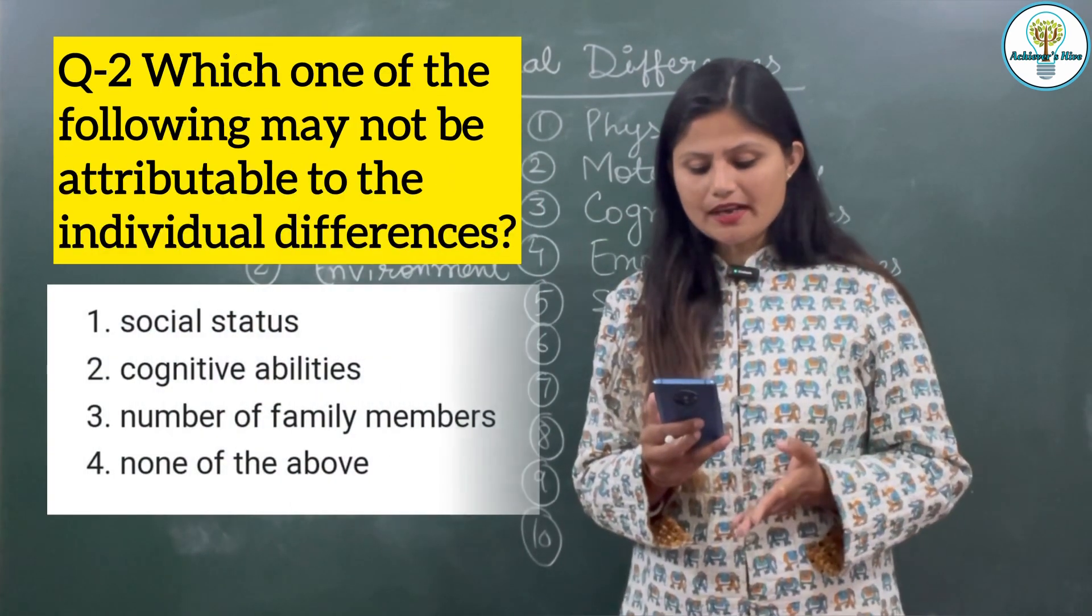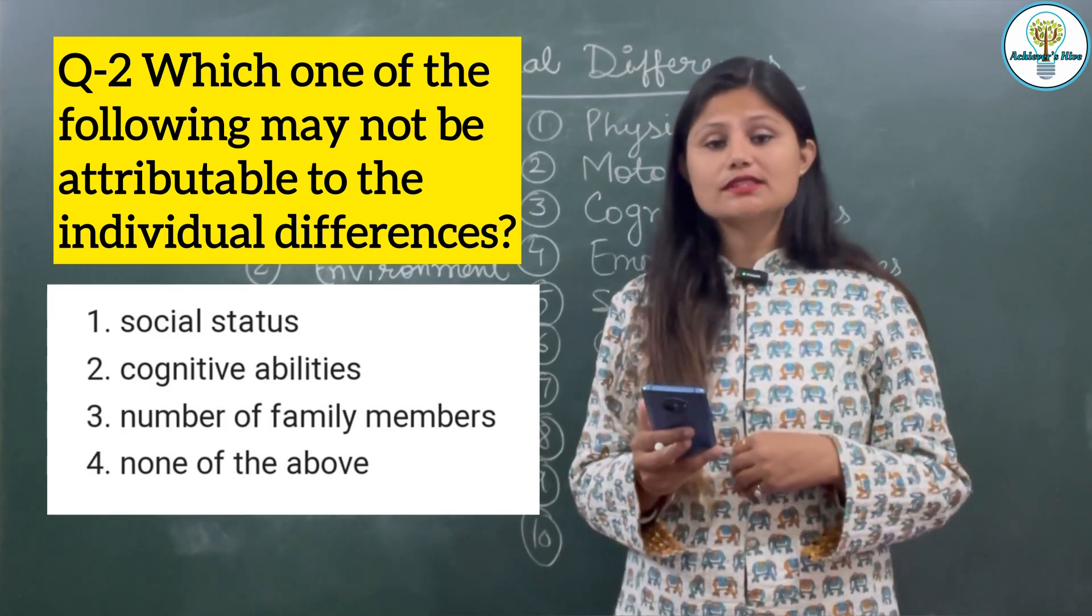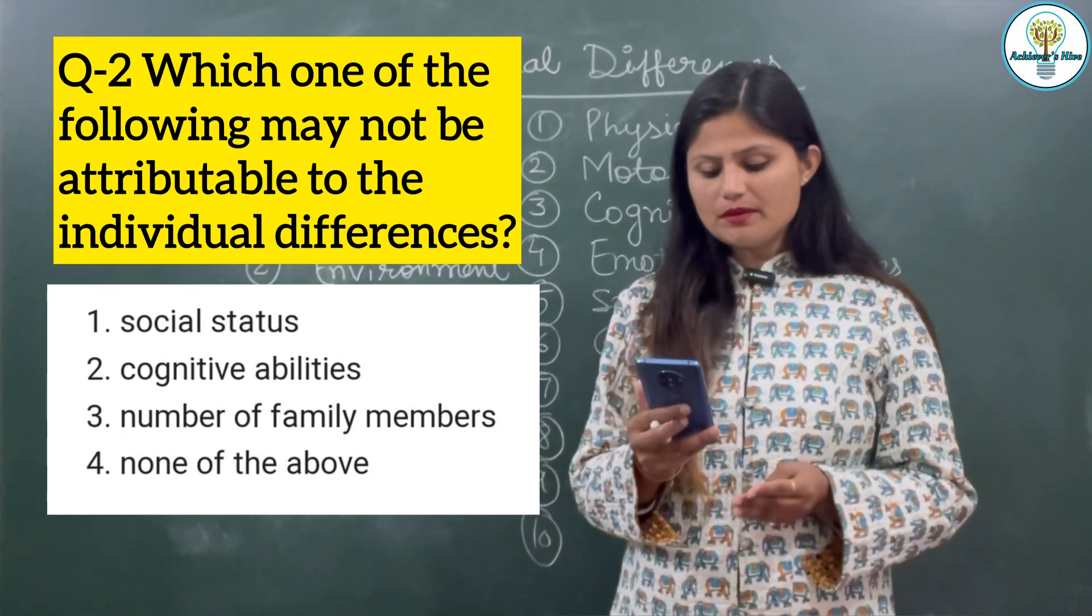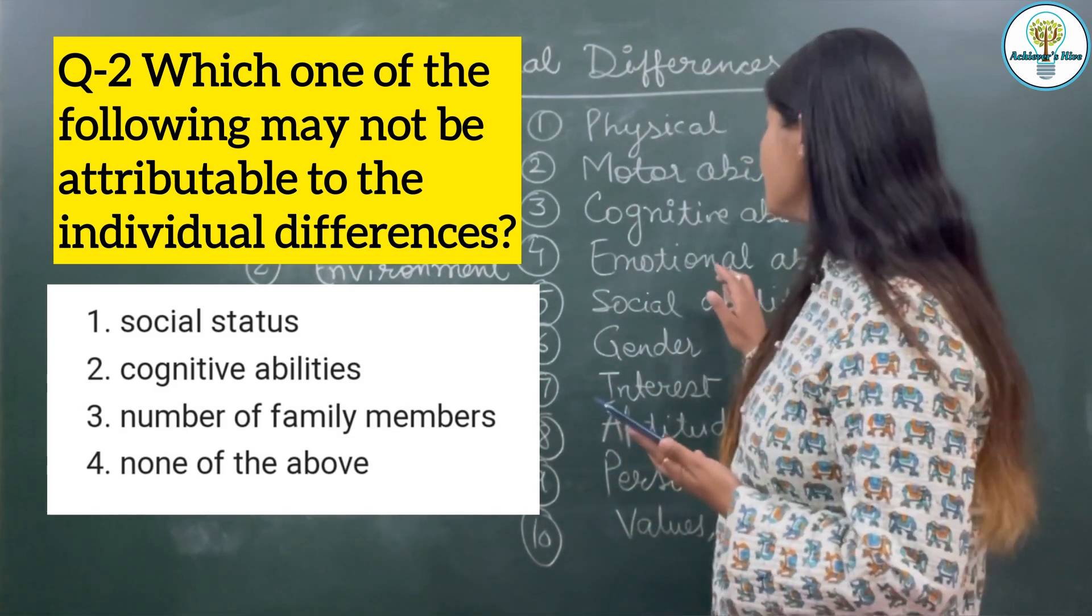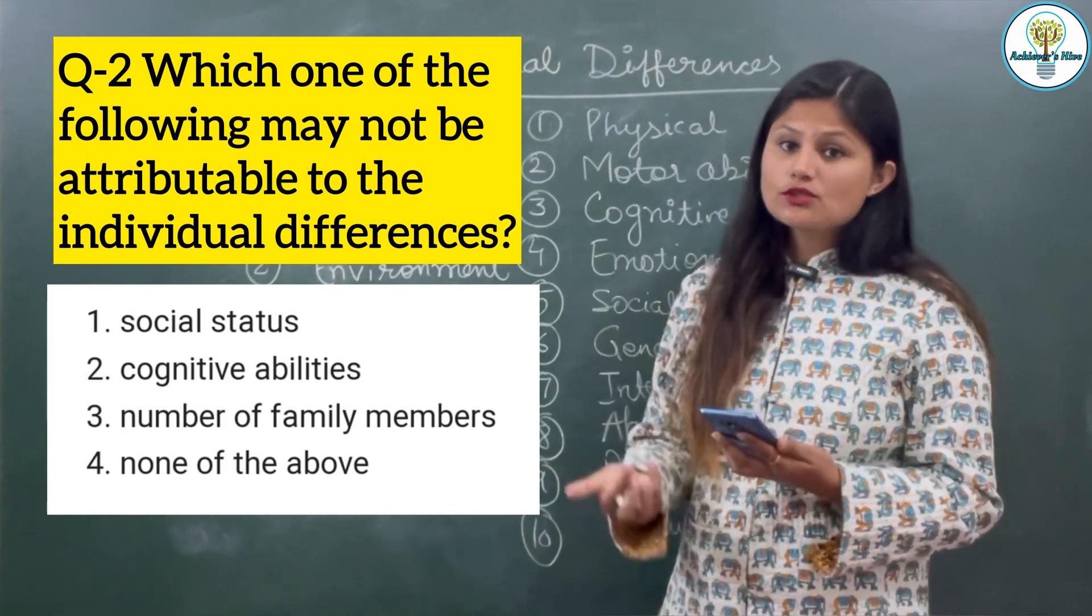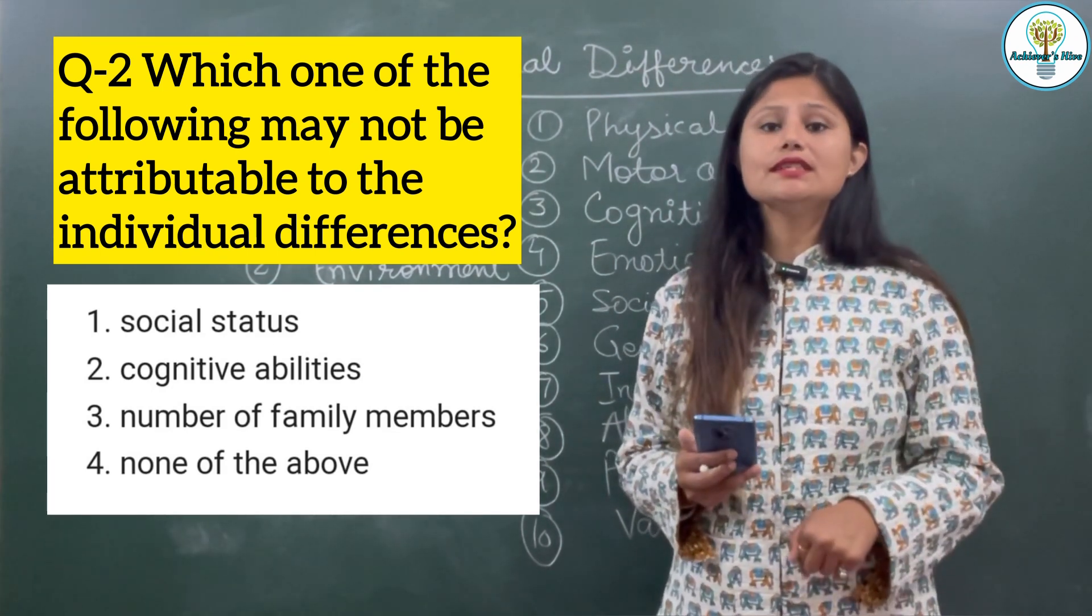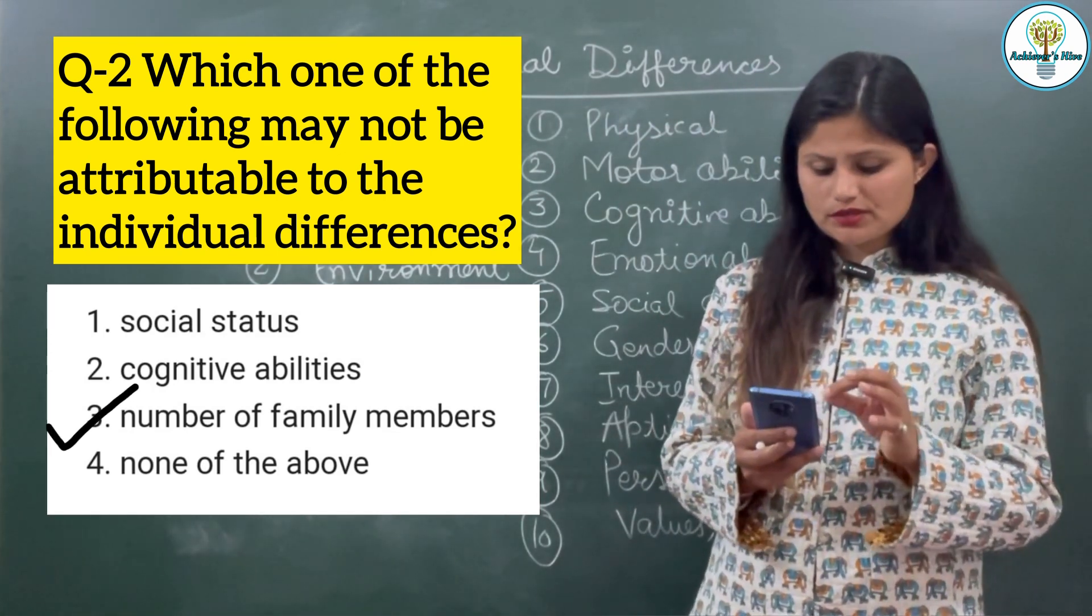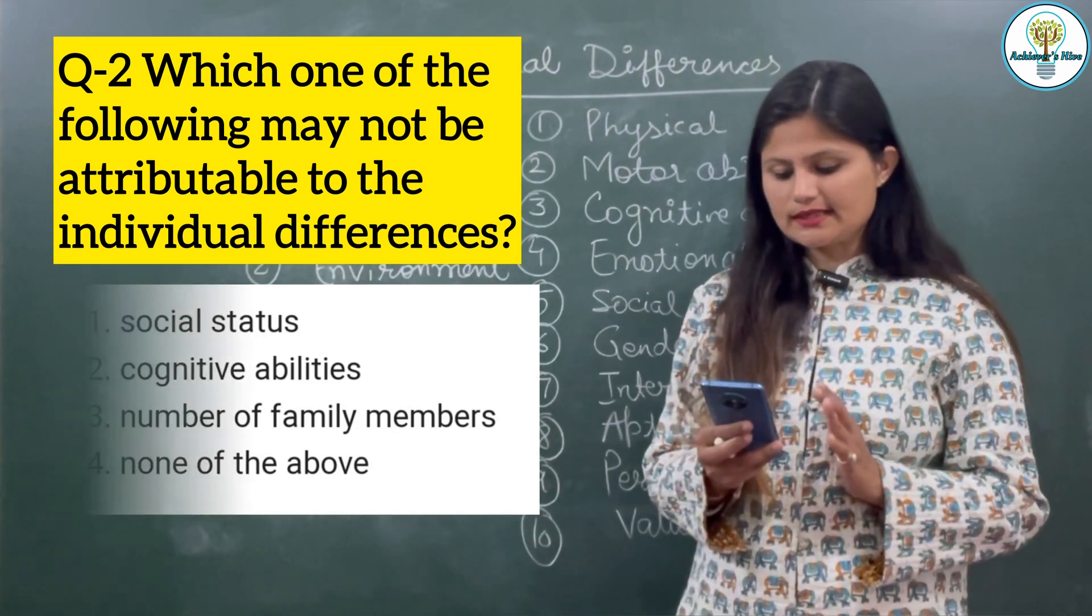Next question: which one of the following may not be attributable to individual differences? Options are social status, cognitive abilities, number of family members, none of the above. Social status relates to social abilities we discussed. Cognitive abilities we discussed. Number of family members doesn't impact individual differences. So option 3, the third option is the correct one - that is what doesn't impact individual differences. Other things we discussed do impact.